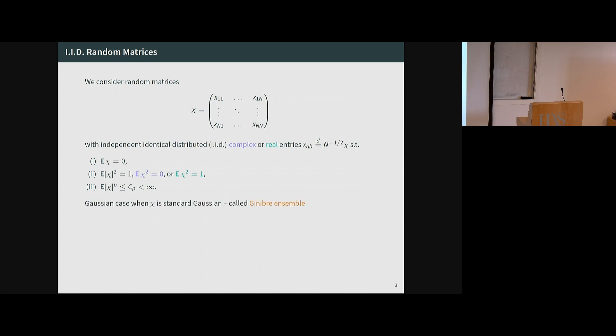As I said, this ensemble does not have a name — I just call it IID matrices. The Gaussian version, when the random variable is Gaussian, is the famous Ginibre ensemble, which everyone has heard of. The normalization guarantees that this matrix is roughly order-1; you can verify this by computing the trace of X X*, which in expectation turns out to be 1 — a simple calculation showing that the spectrum of the matrix is roughly order-1.